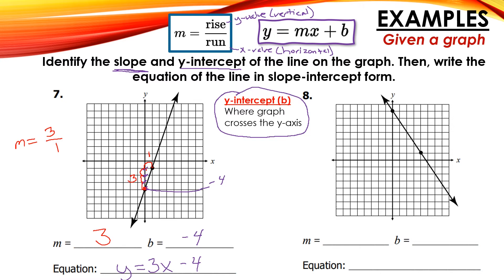Let's take a look at number 8. Starting at the point closest to my left, since I have to count down to get to the second point, I know it's going to be a negative slope — we can see the line falls from left to right. Counting down: 1, 2, 3, 4, 5, 6 — my rise is negative 6. Then going over: 1, 2, 3, 4 — my run is 4. So my slope is negative 6 over 4, and reduced — both divisible by 2 — my slope is negative 3 over 2.